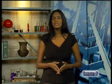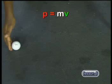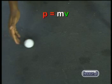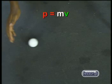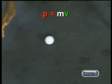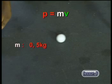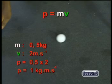Let's start this lesson by thinking about what happens when particles collide. Remember that any particle that is moving has momentum. Momentum is the product of the mass and the velocity of an object. So this ball with a mass of 0.5 kilograms that is moving at 2 meters per second has a momentum of 1 kilogram meter per second.